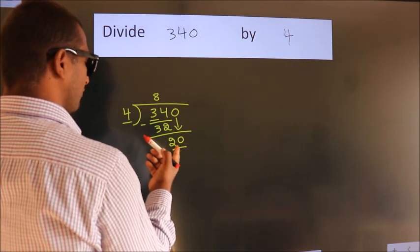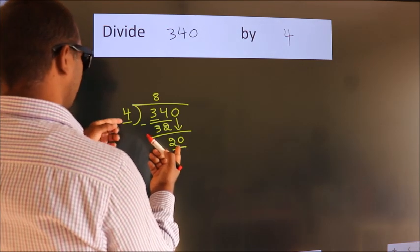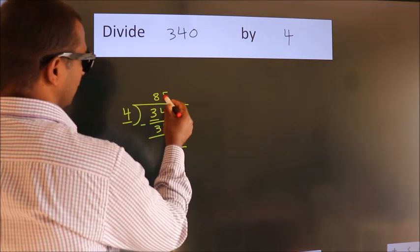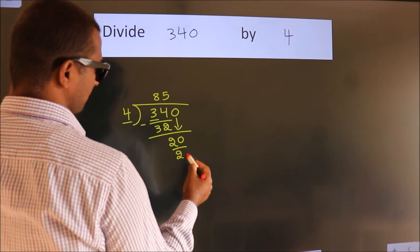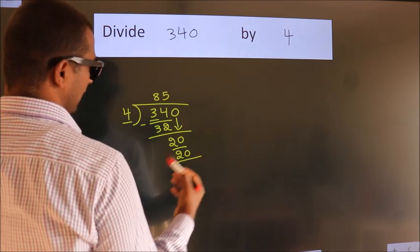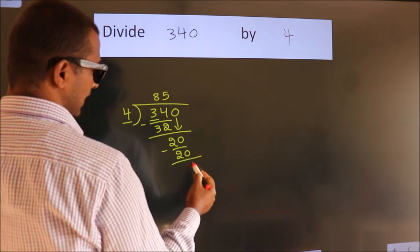So 20. When do we get 20 in the 4 times table? 4 times 5 is 20. Now we subtract. We get 0.